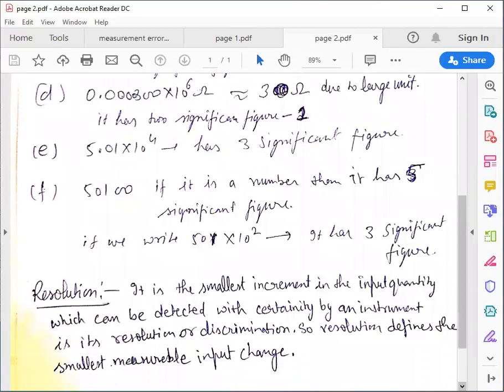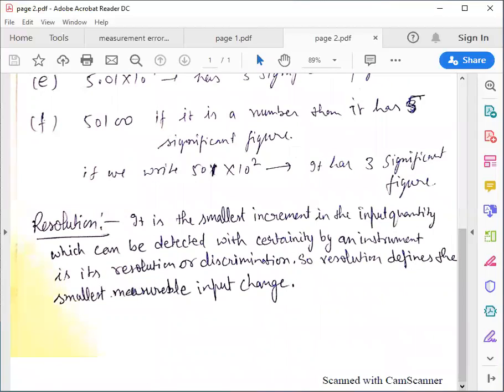Resolution is basically the smallest increment in the input quantity which can be detected with certainty by an instrument. It's called resolution or discrimination. Resolution defines the smallest measurable input change.